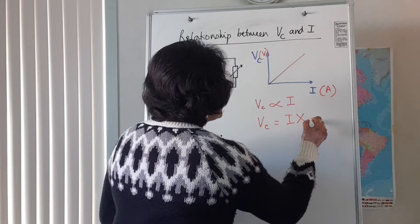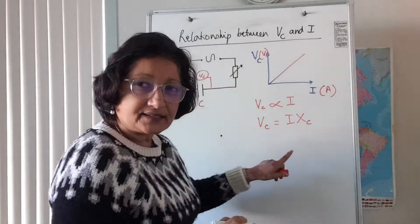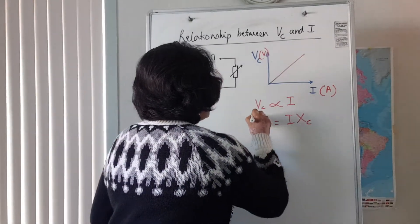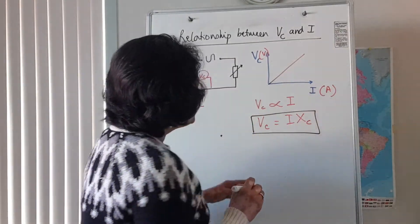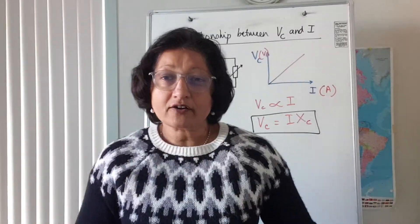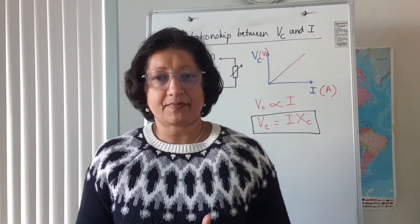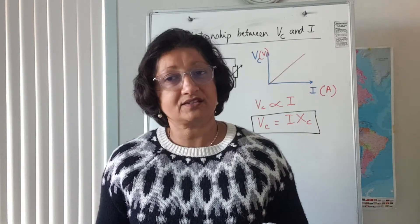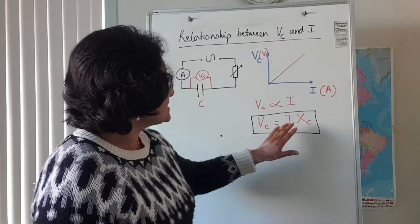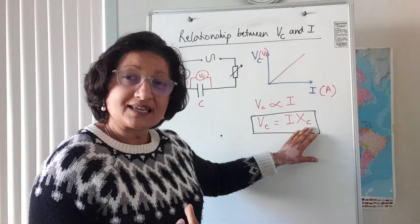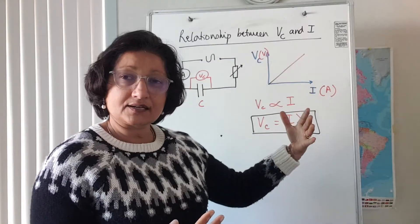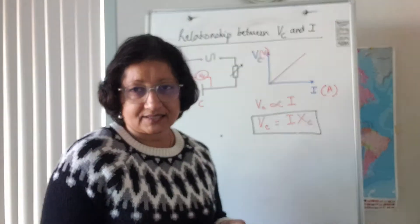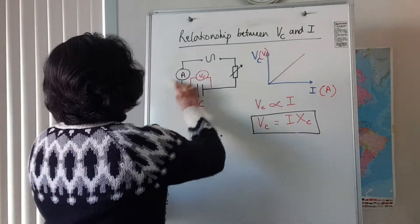When current increases, the voltage across the capacitor plates increases as well, and the constant of proportionality is called reactance — because it's the reactance of the capacitor, we use the symbol Xc. Reactance is the current-limiting property of the capacitor. It does not convert electrical energy to heat like a resistor does, but the presence of the capacitor in an AC circuit will have a current-limiting effect on the circuit current.